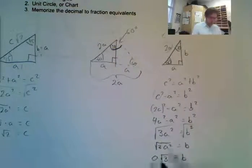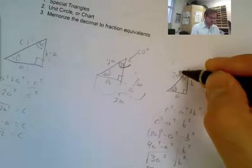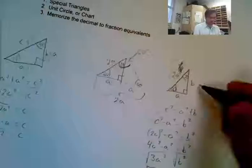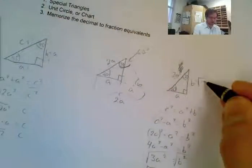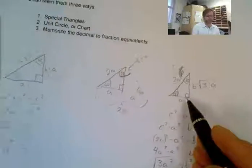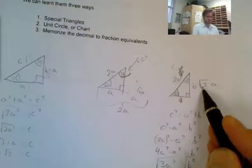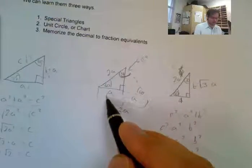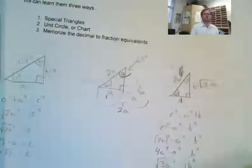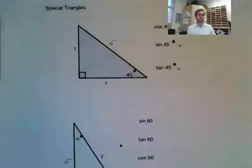So we have a ratio: if the short leg is 1, the hypotenuse is 2, and the long leg is √3. For the 45° triangle, if each leg is 1, the hypotenuse is √2, and each leg is 1. These ratios help us when creating trig ratios.